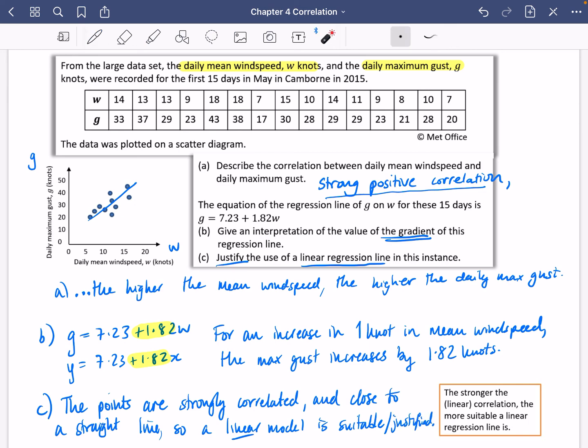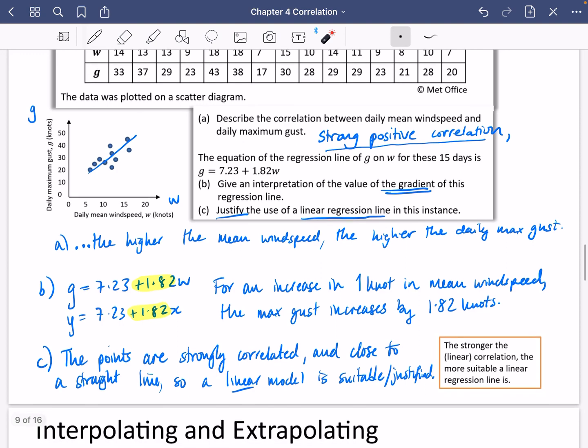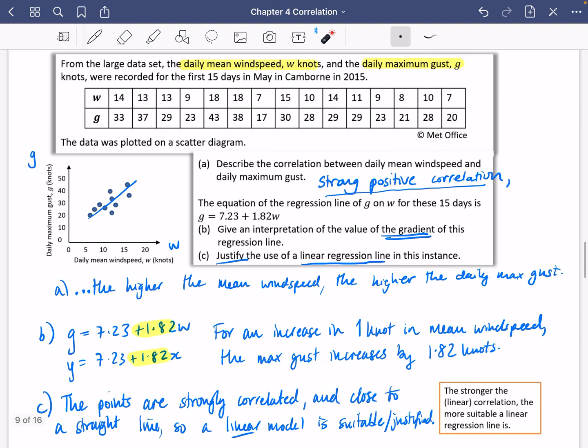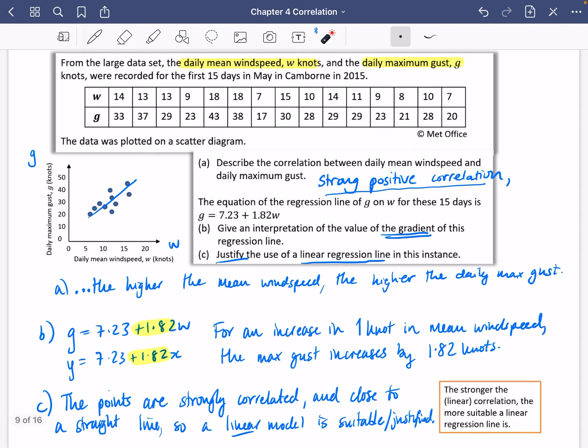So it says here that the stronger the linear correlation, the more suitable a linear regression line is. If they're really close to the line, then that's good for linear. If they don't look like they're close to a line, we shouldn't use a linear regression model. Okay. So I'm just going to pause the video there. And we're going to do one bit about how we should be careful of a couple of things with correlation.